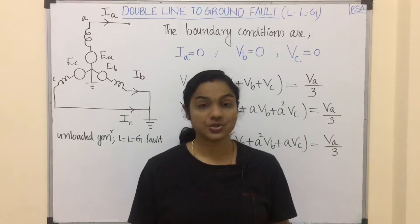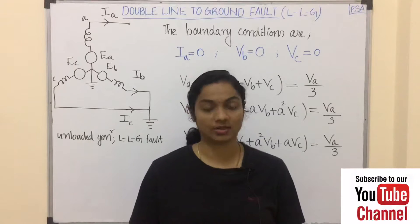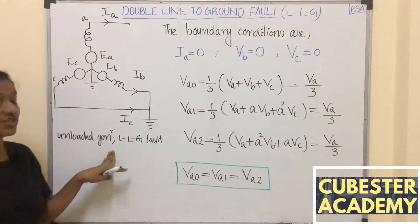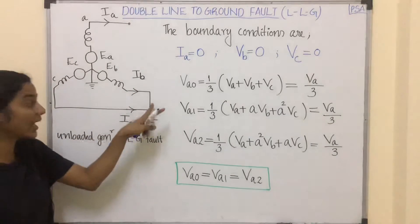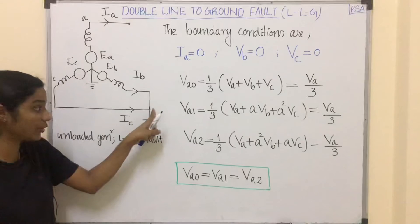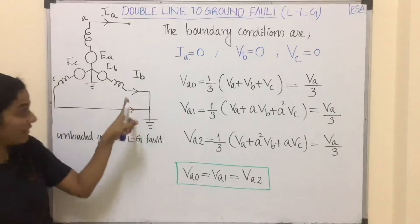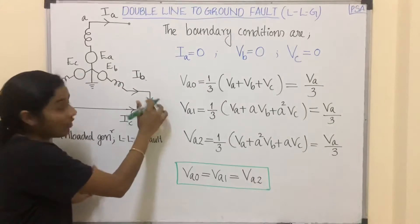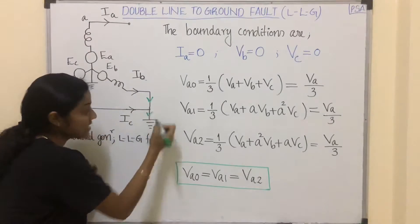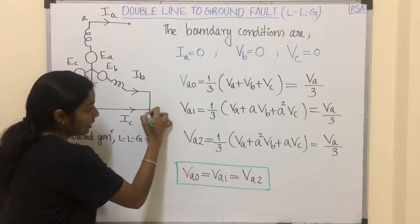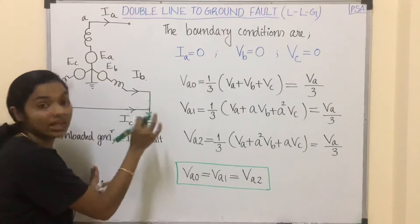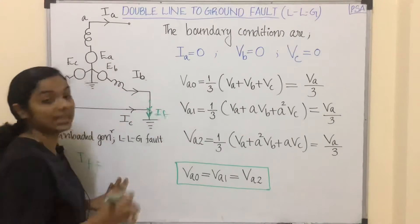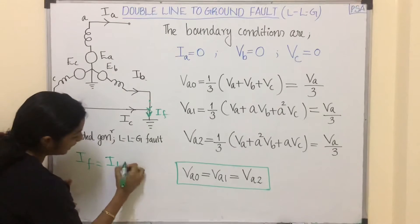Hello everyone, welcome to today's video. Today we are going to discuss double line-to-ground fault, or we can say it as LLG fault. LLG fault means two lines are short-circuited and the short-circuited terminal is grounded. Here we can see phase B and phase C are short-circuited. The fault current flows to the ground, and from this terminal if we apply KCL, IB plus IC equals IF.